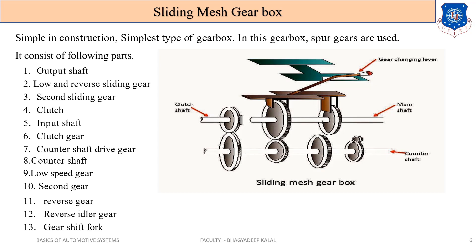Let's first discuss the sliding mesh gearbox. The simple construction is shown in this diagram. The sliding mesh gearbox is very simple in construction — it is a very oldest type of gearbox, the oldest type of manual transmission used in automobiles.